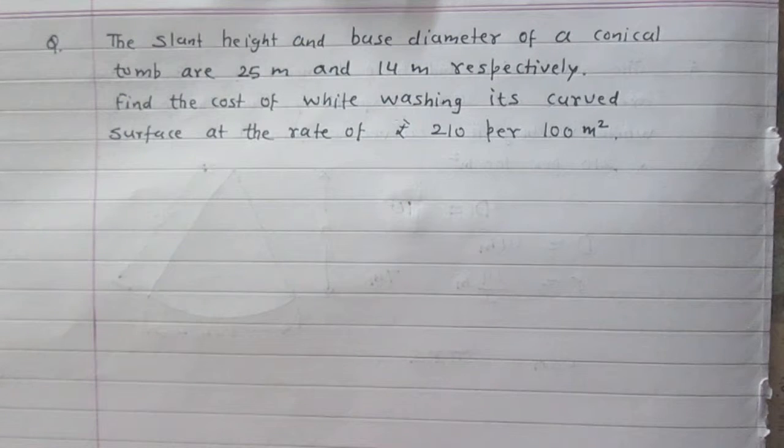The slant height and base diameter of a conical tomb are 25m and 14m respectively. Find the cost of whitewashing its curved surface at the rate of Rs 210 per 100m².